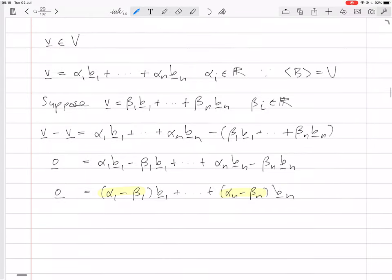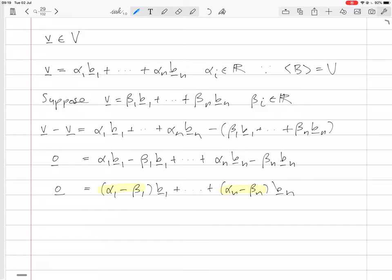the only scalars that make a linear combination of those basis vectors equal to zero are all zero. So that means αᵢ - βᵢ = 0 for all i, and that's because B is linearly independent.